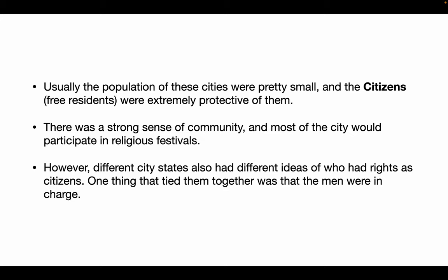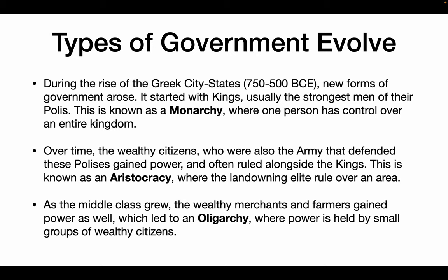The one thing that tied them together was — and the men were in charge. During the rise of the Greek city-states, we see new forms of government. We have monarchies — a monarchy is where a king is in charge and one person has control over the entire kingdom. However, there's also a form of government where wealthy citizens were leaders of not just the economy, but also military leaders. They defended the polises and eventually gained a lot of power, ruling alongside the kings. This is known as an aristocracy, where the very wealthy, the land-owning elite, ruled over an area. And as the middle class grew, we see wealthy merchants and farmers growing in power as well — what is called an oligarchy, when power is held by a small group of wealthy citizens.